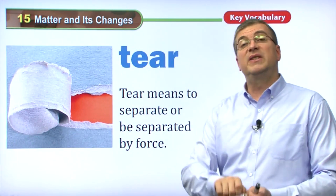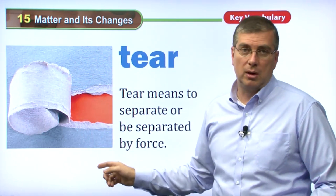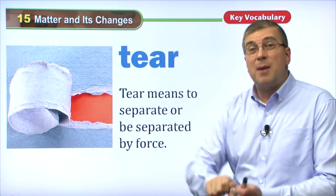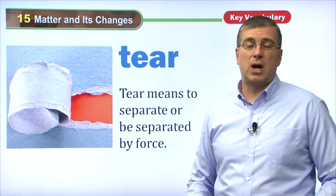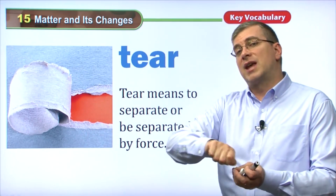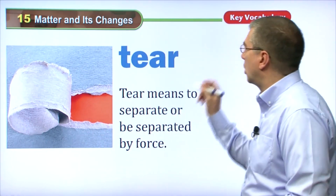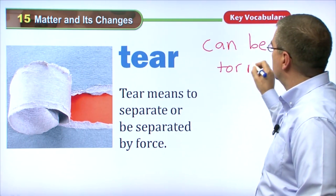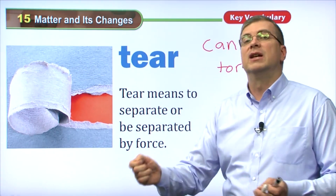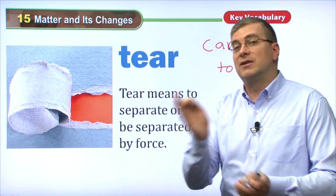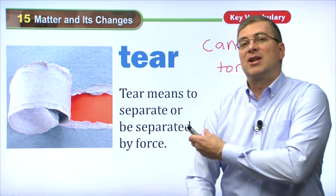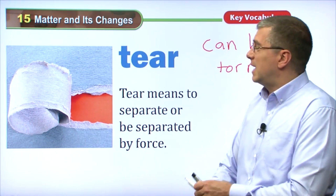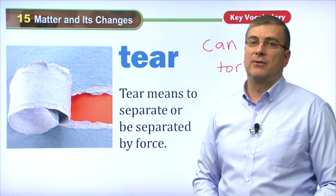Another way to change matter is to tear it, especially when we have something like paper or fabric — you can tear that. Tear means to separate or be separated by force. Things that are soft can be torn. Tear changes to torn when talking about the past — it is torn. My shirt is torn. My skin is torn. So you can tear soft things. That means to separate or be separated by force.